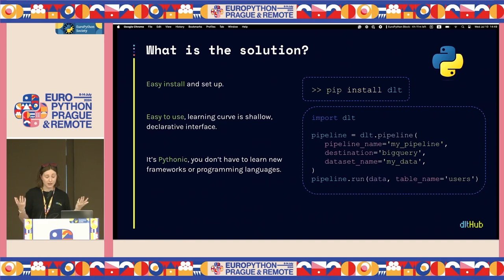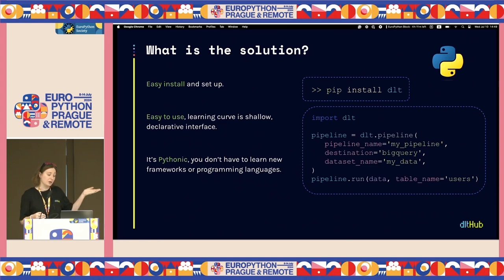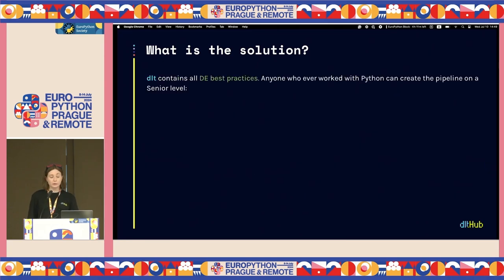So why DLT? It's really easy to install — pip install DLT and go. It's easy to use because the learning curve is shallow and it's Pythonic. You don't need to learn any new framework or language. As an ML engineer, I really like that DLT was built by really experienced data engineers, so if you work with Python and don't have a lot of experience in data engineering, you can build pipelines at a senior level.